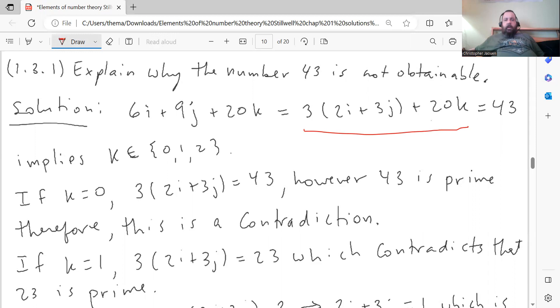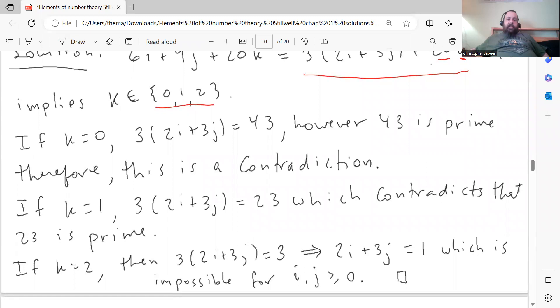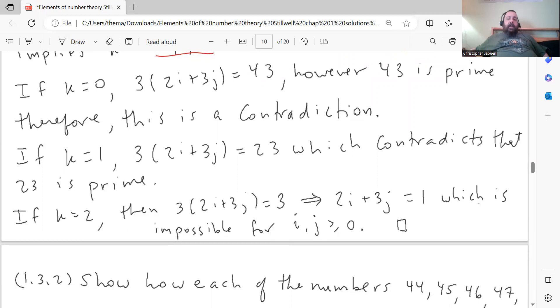Problem 1.3.1: explain why the number 43 is not obtainable. So 6i plus 9j plus 20k, I can rewrite in a more convenient way. I want to set that equal to 43. If this is equal to 43, then the possible values for k, because that's the number you're multiplying 20 by, k can only be possibly 0, 1, or 2. Because past 2, you'll have to get more than 43 McNuggets. So these are the only possible values for k. If k is 0, that would mean that 3 times 2i plus 3j is equal to 43. However, 43 is a prime number. If this were true, this would say that 3 divides 43, which is not true. It's a contradiction. So k equals 0 is not a possibility.